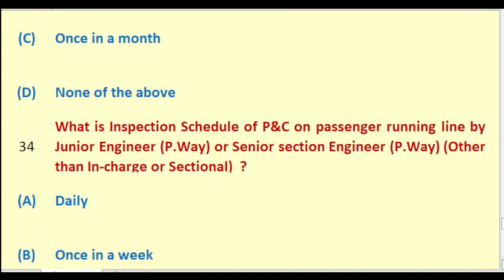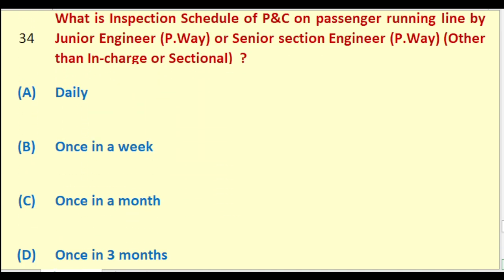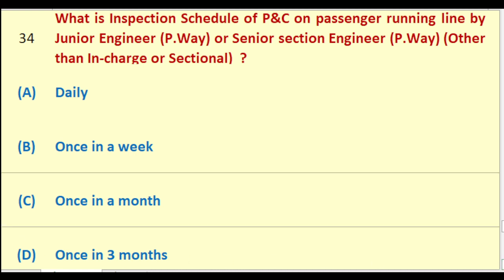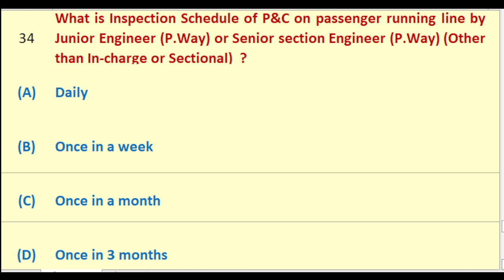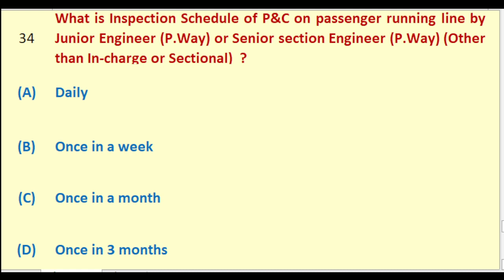What is the inspection schedule of PNC on passenger running line by Junior Engineer Permanent Way other than in charge or sectional? Options: daily; once in a week; once in a month; once in three months. The right answer is: once in a month.